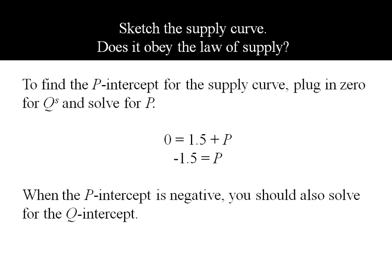Now when your P-intercept is negative for your supply curve, you should also go ahead and solve for the Q-intercept because it'll make it a lot easier for you to graph your curve.